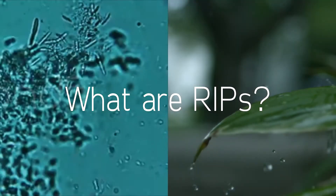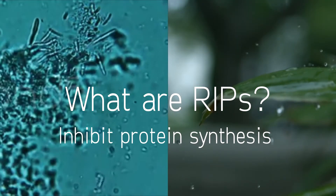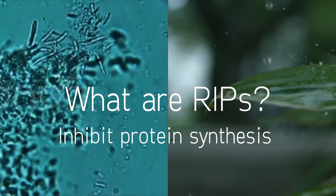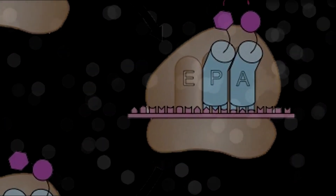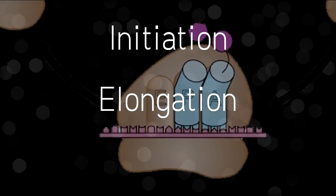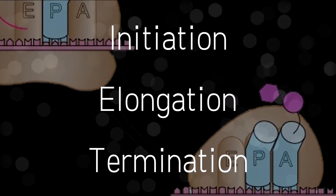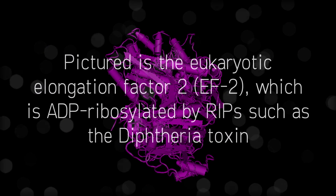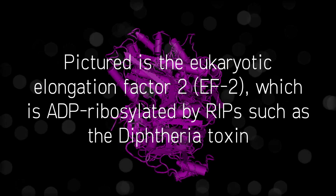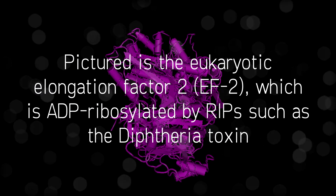They are proteins of plant or microbial origin that ultimately inhibit protein synthesis via ribosome inactivation. Protein synthesis, also known as translation, involves three key steps: initiation, elongation, and termination. RIPs typically inhibit the elongation step through inactivation of elongation factors.